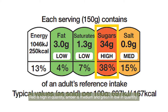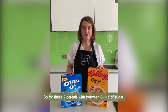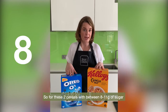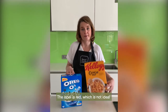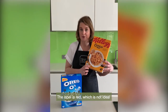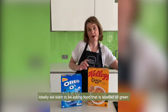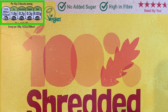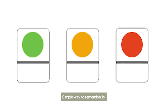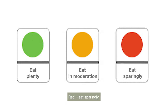Red is high in quantity, amber is medium, and green is low in quantity. For these two products that contain between 8 and 11 grams of sugar in each small bowl of cereal at 30 grams, you'll see that the amount of sugar is labelled in red, which is not ideal. Really we want to be eating cereals and all food where the label is ideally all green, just like on this shredded wheat. A simple way to translate the traffic light system is: green — eat plenty, amber — eat in moderation, and red — eat very occasionally.